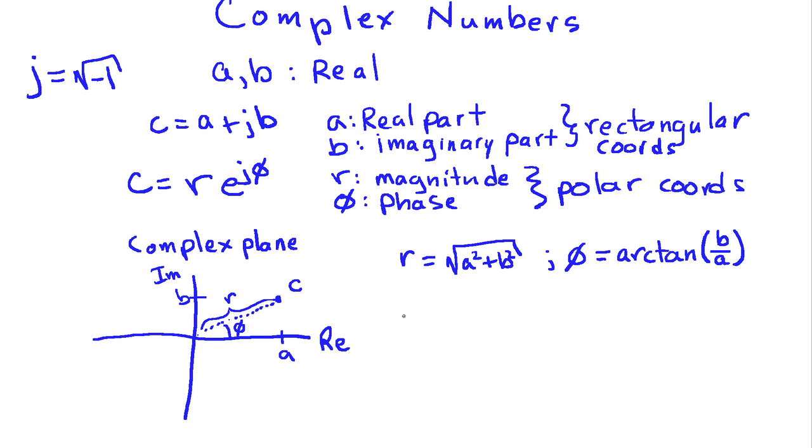Going the other direction, we see again from trigonometry that a is going to be r cosine of phi, whereas b is going to be given by r sine of phi.